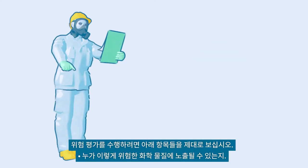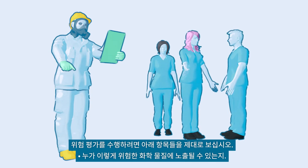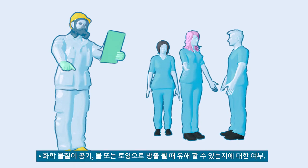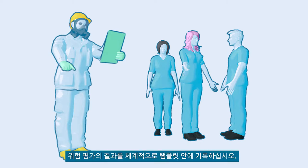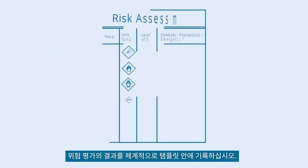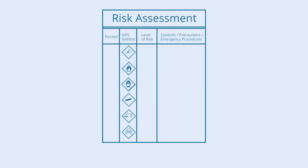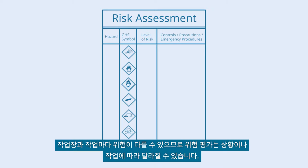To conduct the risk assessment, check who may be exposed and in which way to these hazardous chemicals, and whether the chemicals may do harm when being released into air, water, or soil. Systematically record the findings of the risk assessment — for example, in a template like this one. Since the risks may vary between workplaces and tasks, the risk assessment will have to be situation- or task-specific.